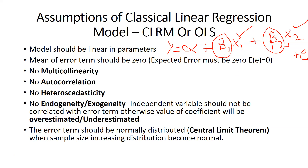In the first assumption, the model should be linear in parameters — the parameters should be linear. It should not be something like β1 squared; that is not acceptable. But if we have x1 squared, that is acceptable, because these are variables and those can be non-linear. But the coefficients — the parameters — cannot be non-linear.